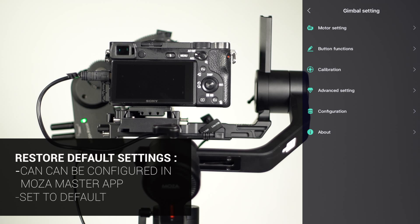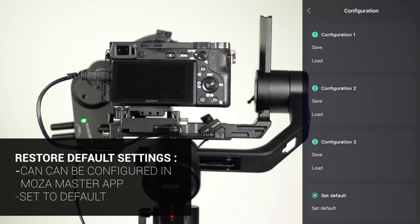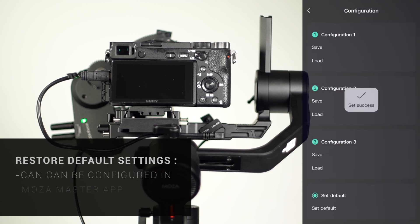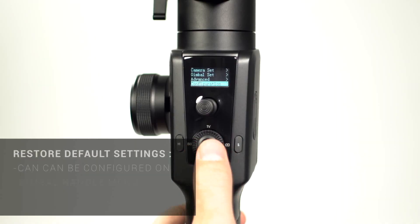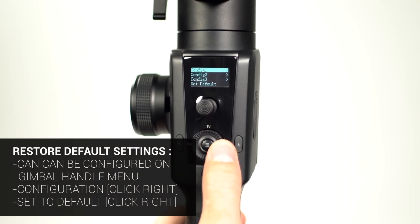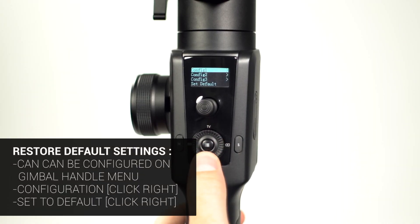If you need to restore the gimbal to default settings, you can access the Moza Master App Configuration and set it to default, or from the gimbal's handle under Configuration.